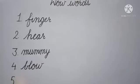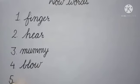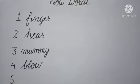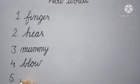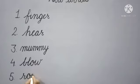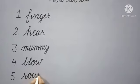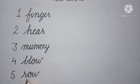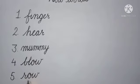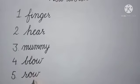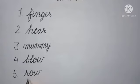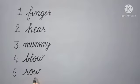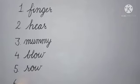Next, number 5: 'row'. What is the spelling of row? R-O-W, row. Row means 'line'.